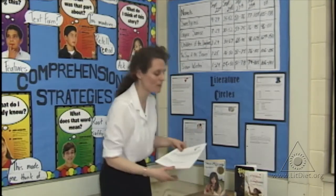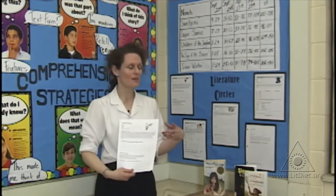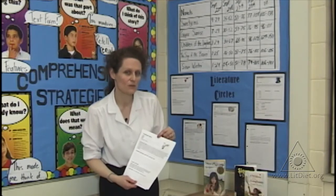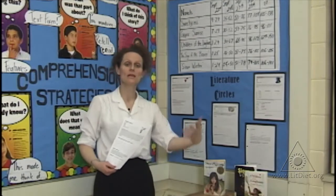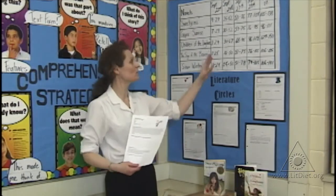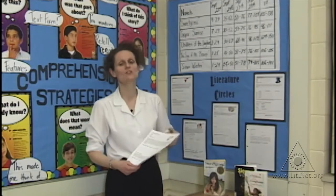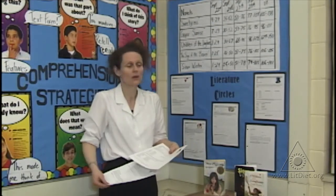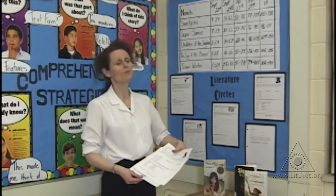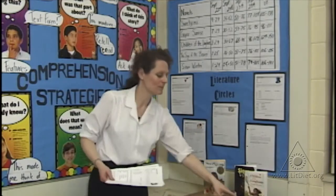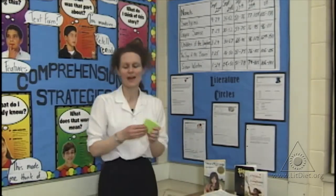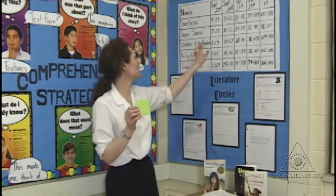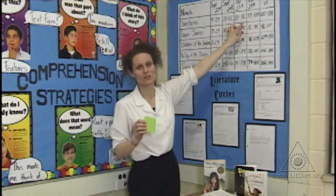Each of the children are given their own package and the package has the five pages in it. Each child starts on a different page, and then when they meet again after they've read the next section of the text, they just move on to the next page. That way everybody works through the book and everybody reads the book. By the end, you have students put little post-it notes in at the end of each of the sections.